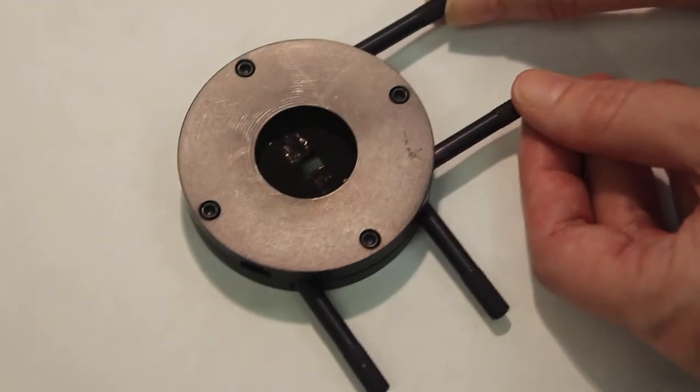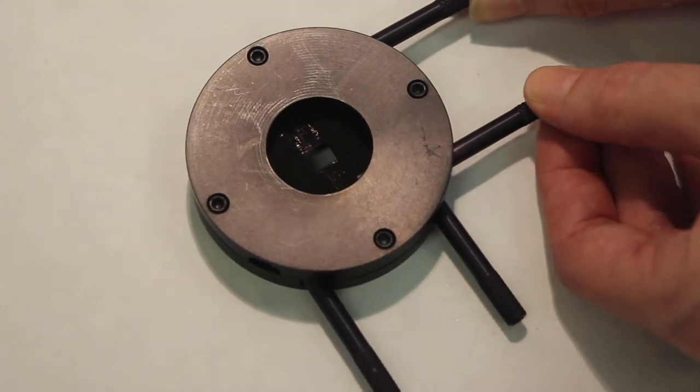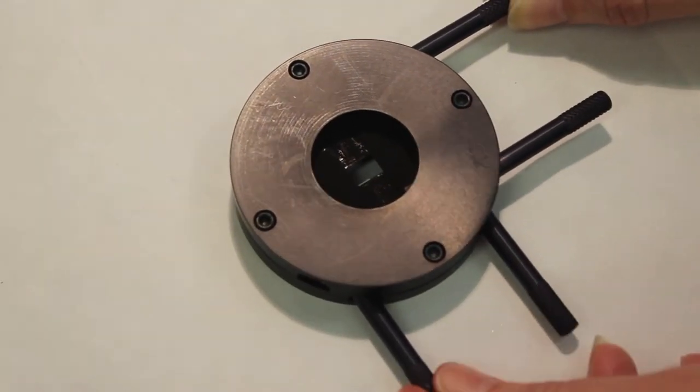When we analyze the sample on the FTIR microscope, we choose the spot that we wish to analyze using an aperture. We can choose the shape and the size. This is the aperture and you can see you move the little sides of the aperture back and forth to change the spot size.